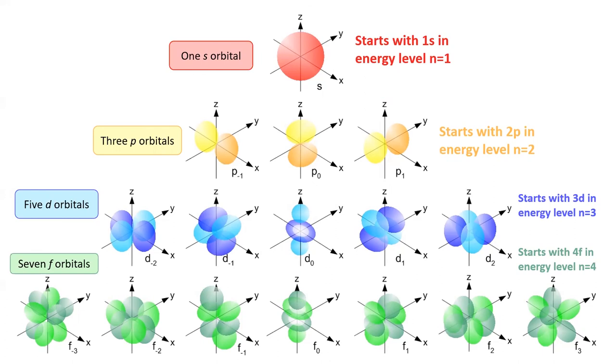There are even more orbitals than these, such as g and h orbitals, but we don't see them come up very often in chemistry. The first three, s, p, and d, will be the most important for this class.